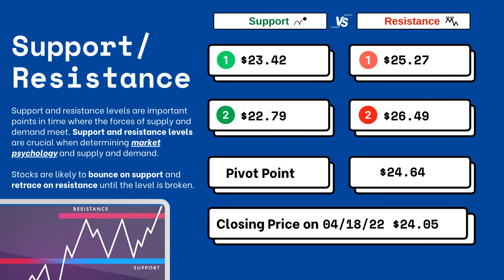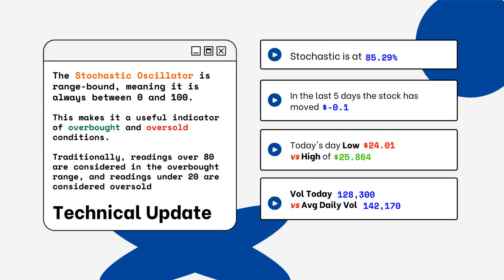On the right side you'll see three support levels and also three resistance levels. These are areas that you want to watch when looking at this particular stock. Stocks typically bounce at support levels and they resist at resistance levels, meaning they'll retrace from that top level.